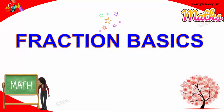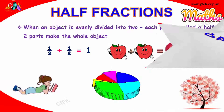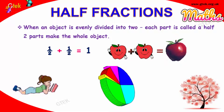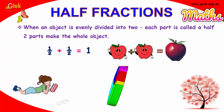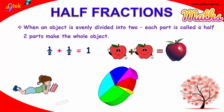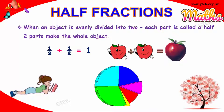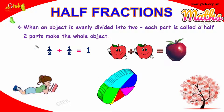Let's move on to Fraction Basics from Jeter Company. When an object is evenly divided into two, each part is called half. Two parts make the whole object, so one by two is referred to as fractions.